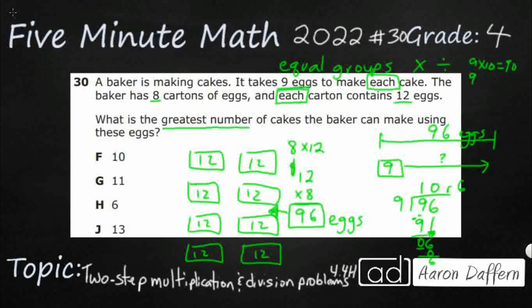If I wanted to do nine times eleven, if I wanted to try to get that eleventh cake, I would need 99 eggs. I've only got 96. So I'm falling right in between there. So I can make ten cakes and I just have six left over.